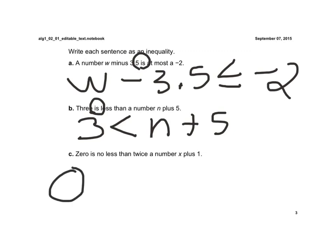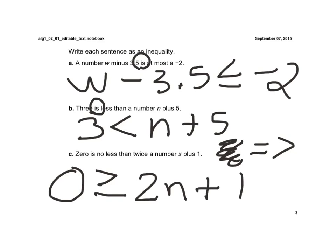0 is no less than. Well, if you think about less than, equal to, and greater than, and it says no less than, it means we take that away. 0 has to be greater than or equal to, twice a number plus 1.